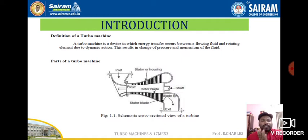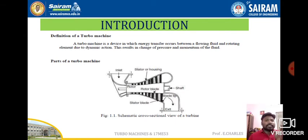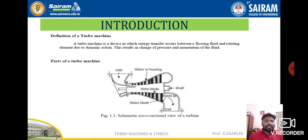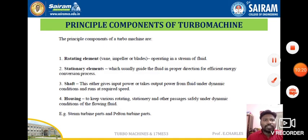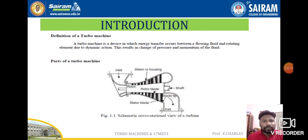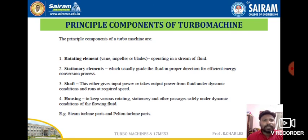Hydraulic energy is the energy available in flowing fluid like water. It is called mechanical energy because the shaft — a mechanical element — rotates. This mechanical energy is then converted into electrical energy through an electrical generator. So, hydraulic energy is converted to mechanical energy, and then mechanical energy is converted to electrical energy. This concludes the introduction to turbo machines, covering the definition, parts, principal components, and working principle.